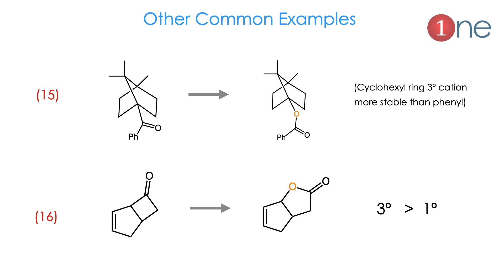Example 15: a bicyclic system on one side and phenyl on the other. The bicyclic system forms a tertiary carbon, similar to a cyclohexane system, so the cation is stable and migration happens via the bicyclic system. Oxygen is inserted between the carbonyl and the bicyclic system. Example 16: a fused five- and four-membered ring system. The carbonyl is adjacent to the four-membered ring. Tertiary cation is more stable than primary, so the tertiary cation on the ring side drives migration. Oxygen is inserted between the ring and carbonyl, forming a five-membered ring — ring strain is also a driving force.